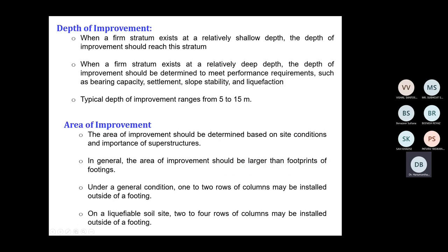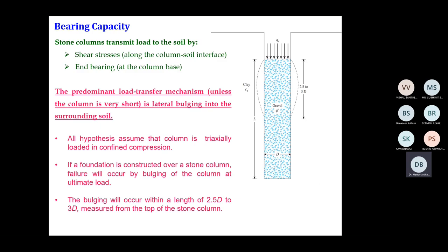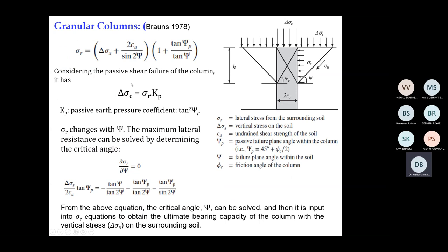The depth of improvement and area of improvement are predominantly decided based on the borehole profile and the client's requirement. Now, how to determine the bearing capacity: all bearing capacities are based on the bulging phenomenon of the stone column. Since we are inherently considering a long stone column, bulging predominantly occurs at a depth of two times the diameter, and may extend as deep as four times the diameter.